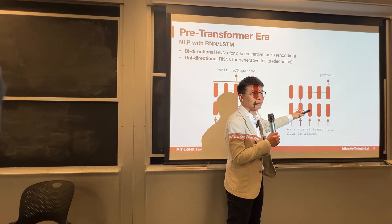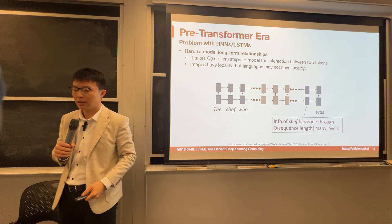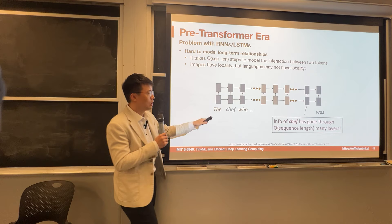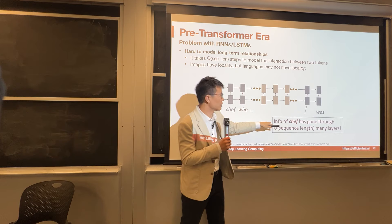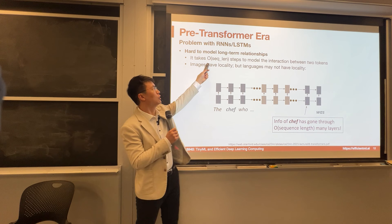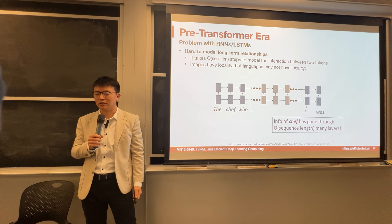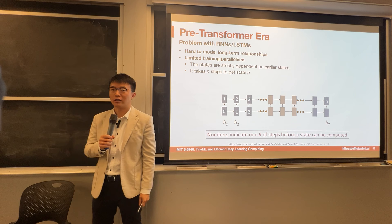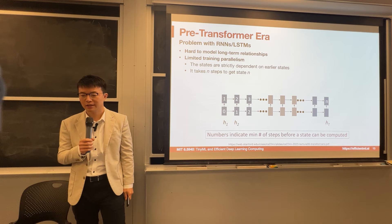Another problem of RNN and LSTM: if you have a long sentence and want to get the information of 'chef' which was mentioned a long time ago, that information has gone through many layers proportional to the sequence length — potentially order of magnitude of the sequence length to model the interaction between two tokens. Another limitation is limited training parallelism: dependency kills parallelization, and it takes N steps to get to state N, making it hard to parallelize.